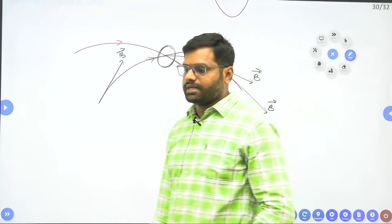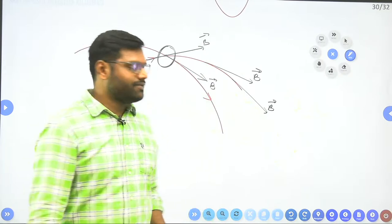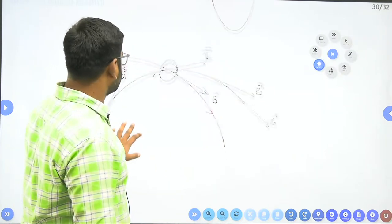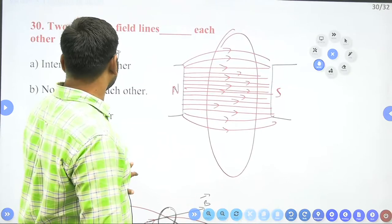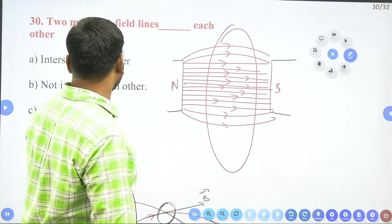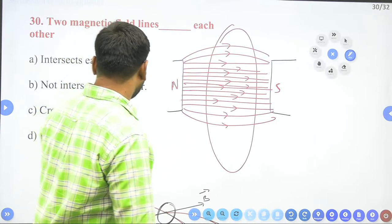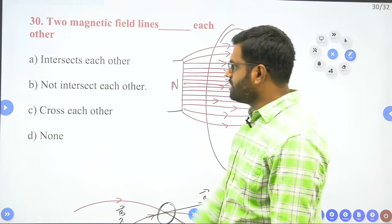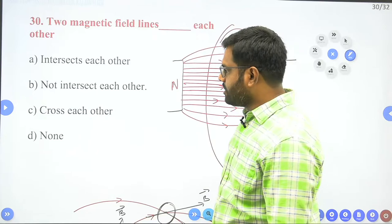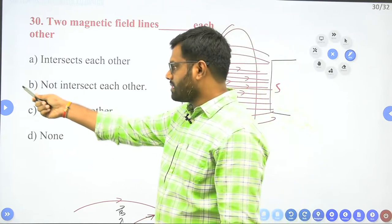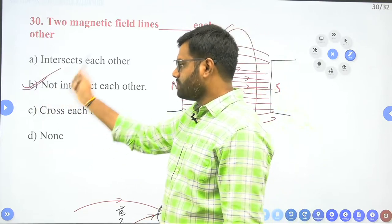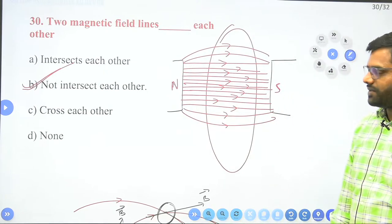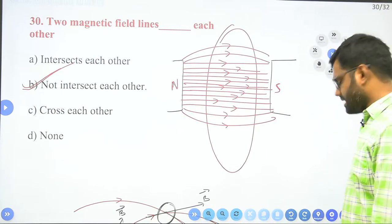Because of that, the magnetic field lines never intersect each other. So the answer to the question 'two magnetic field lines blank each other' is: not intersect each other. 'Intersects each other' is wrong; 'not intersect each other' is the correct option.